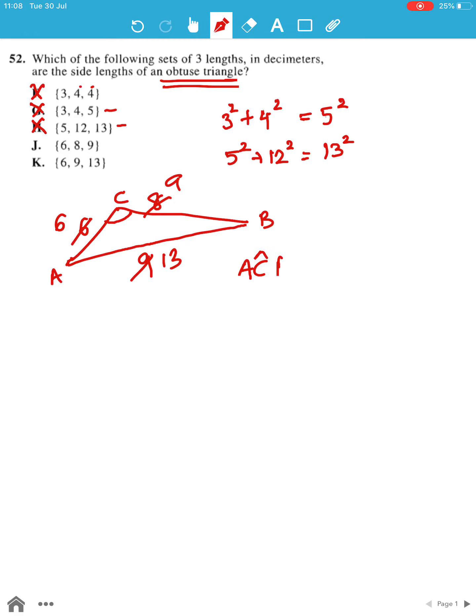Hence giving me an obtuse triangle, so option J is eliminated and we get the answer option K.